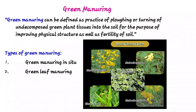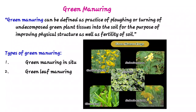The green manure crop can be grown either as a pure crop, main crop, or intercrop. For example, Crotalaria juncea grown in the field and buried in the same field before flowering — that is green manure in situ.